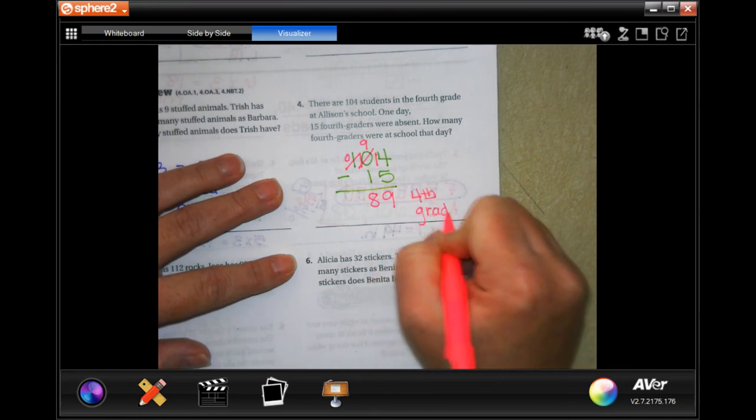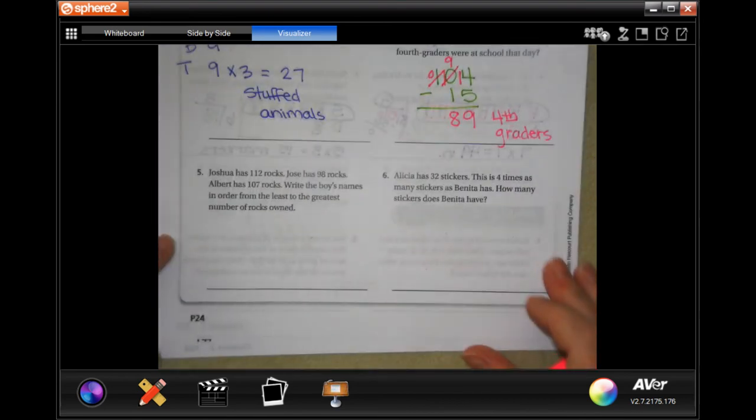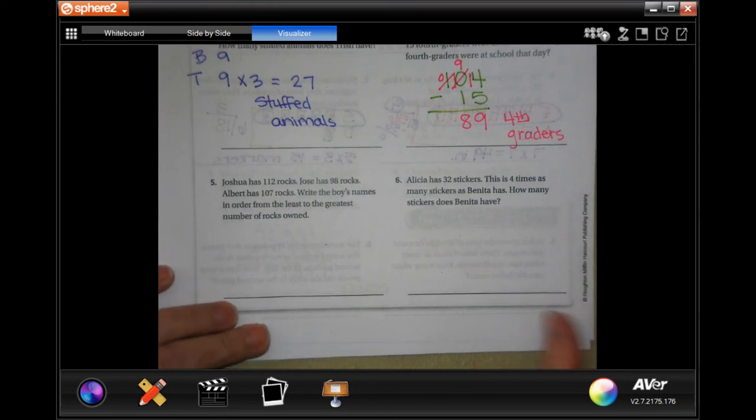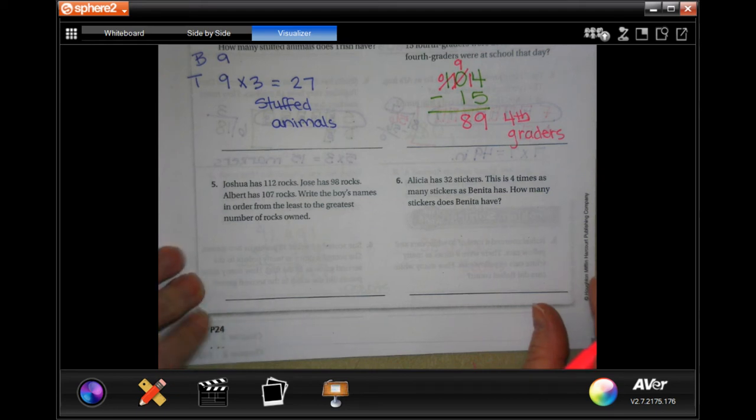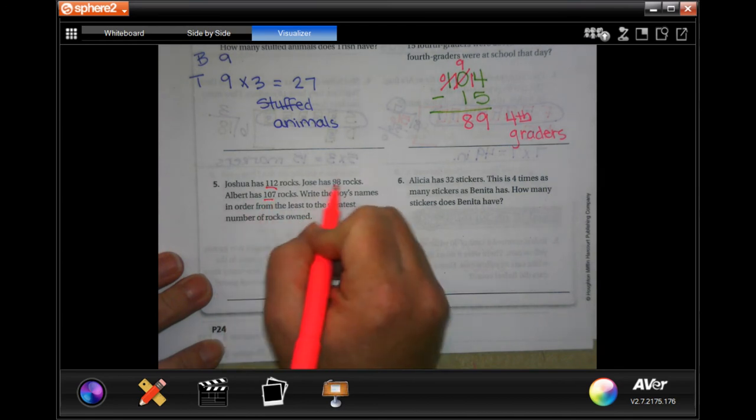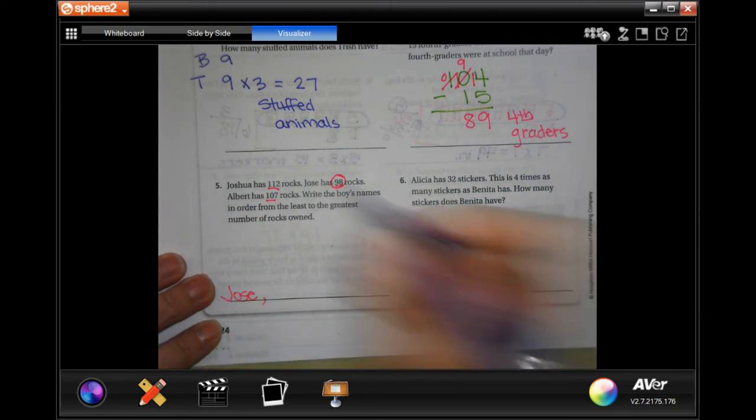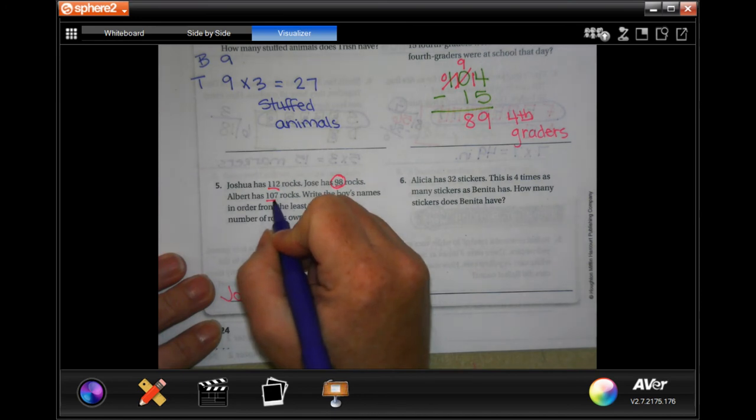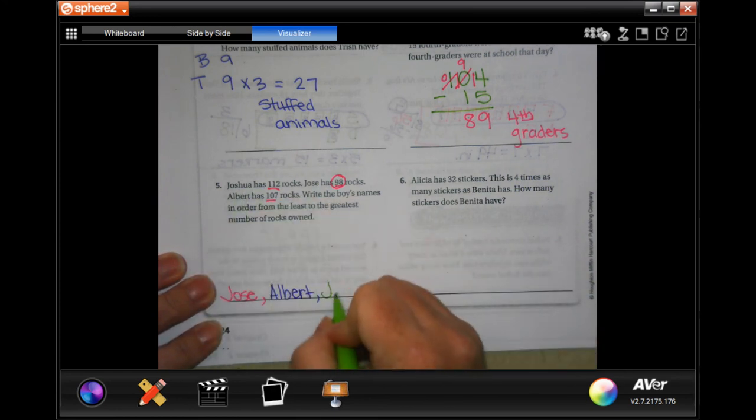Joshua has 112 rocks, Jose has 98 rocks, Albert has 107 rocks. Write the boys' names in order from least to greatest. The smallest number between 112, 107 and 98 is going to be 98, so Jose. Next between 107 and 112 is going to be 107, so Albert, and lastly is going to be Joshua.